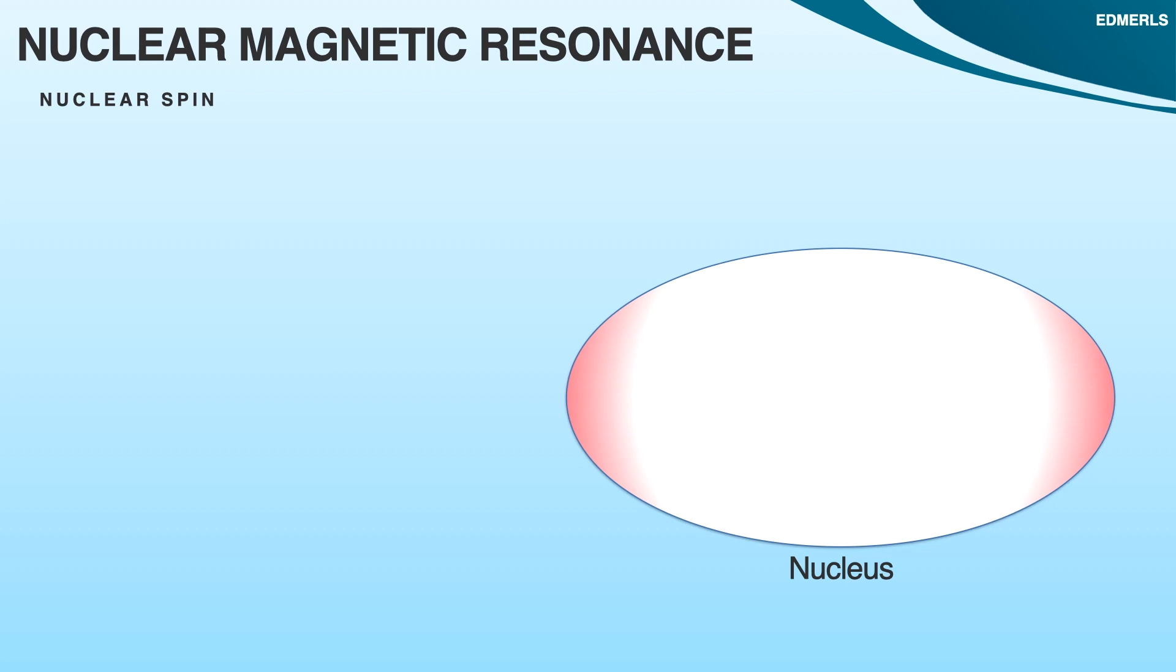Let's talk about the nucleus of an atom. Nucleus consists of mainly two types of particles, protons and neutrons, and both protons and neutrons have spin associated with them. Spin can be clockwise or anticlockwise. One is considered as plus half and the other as minus half.